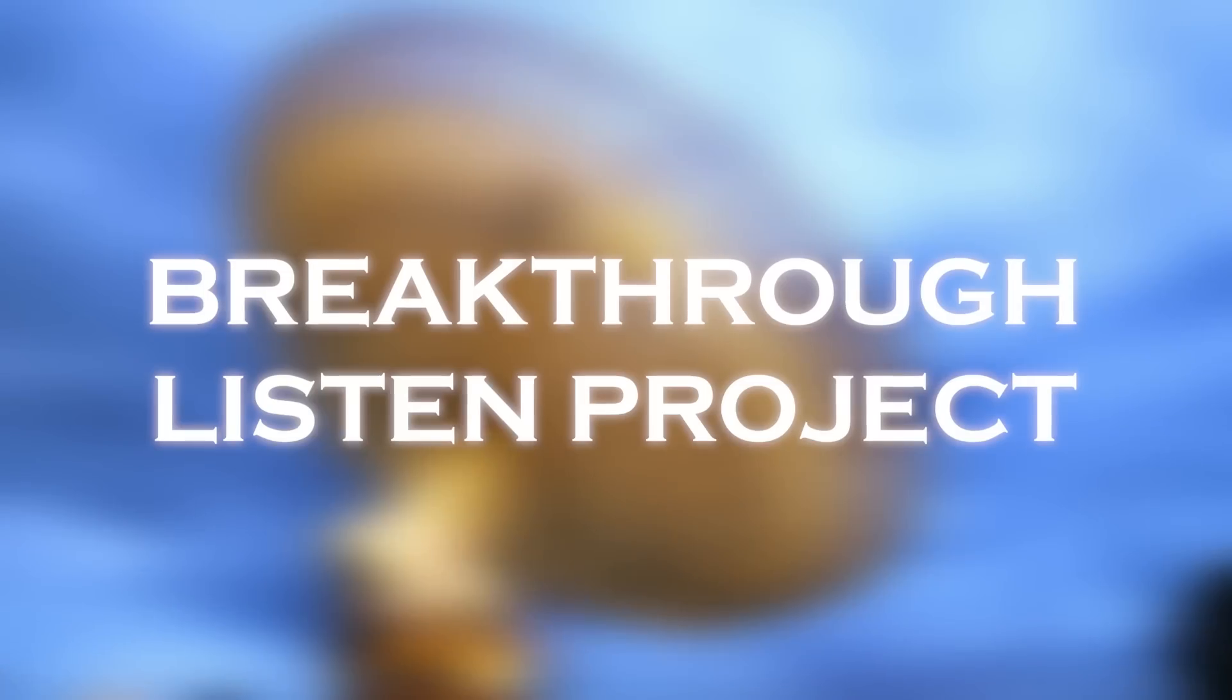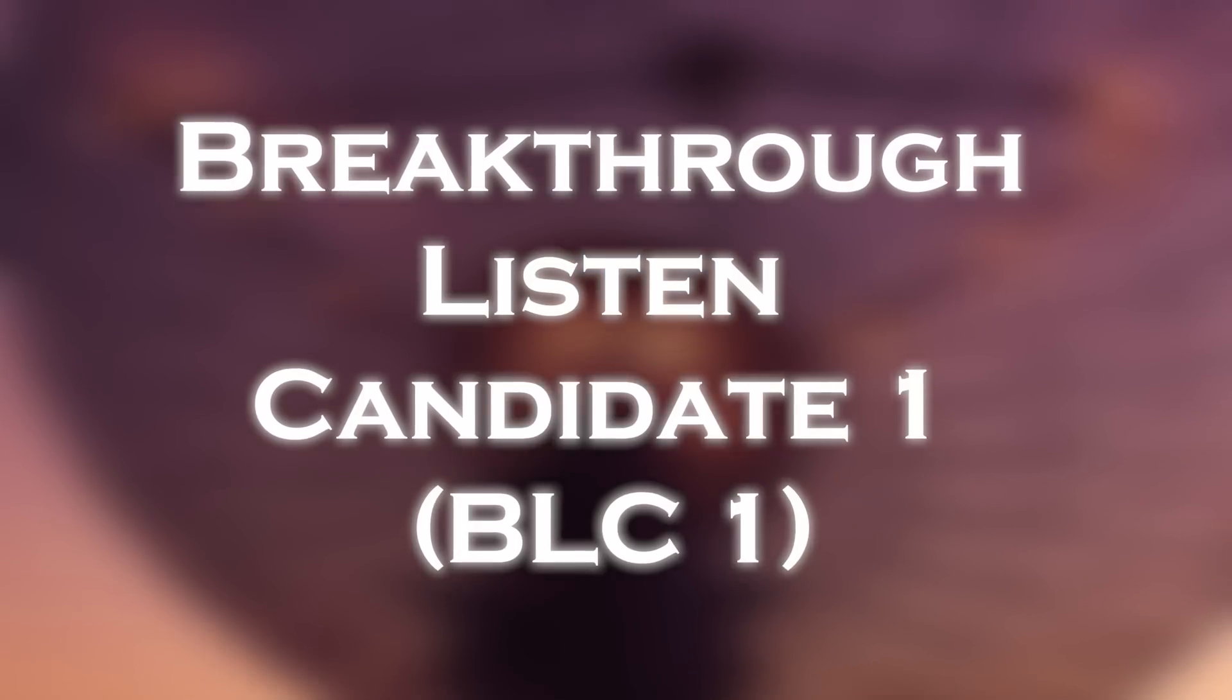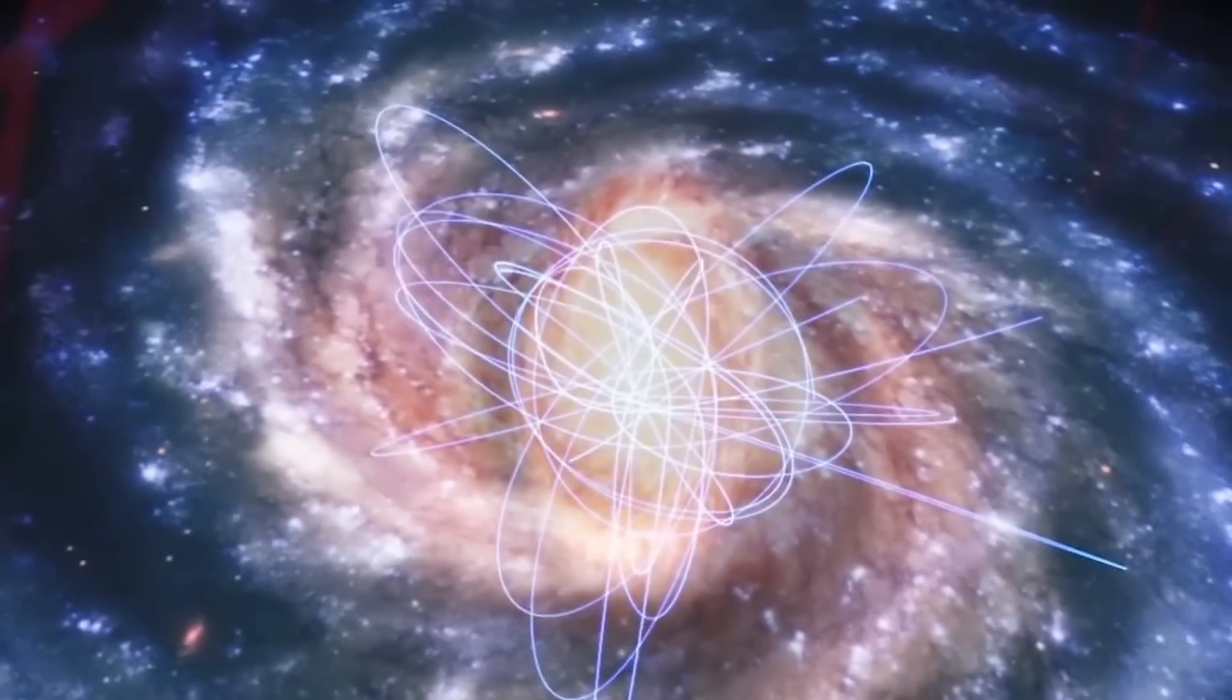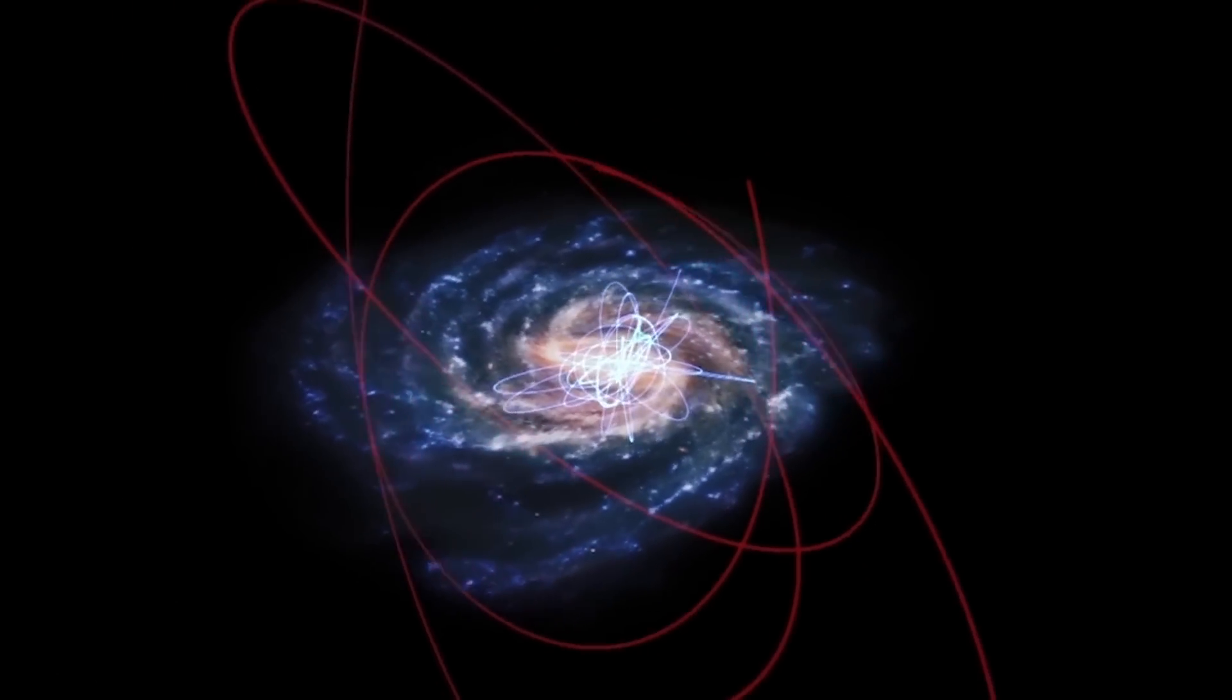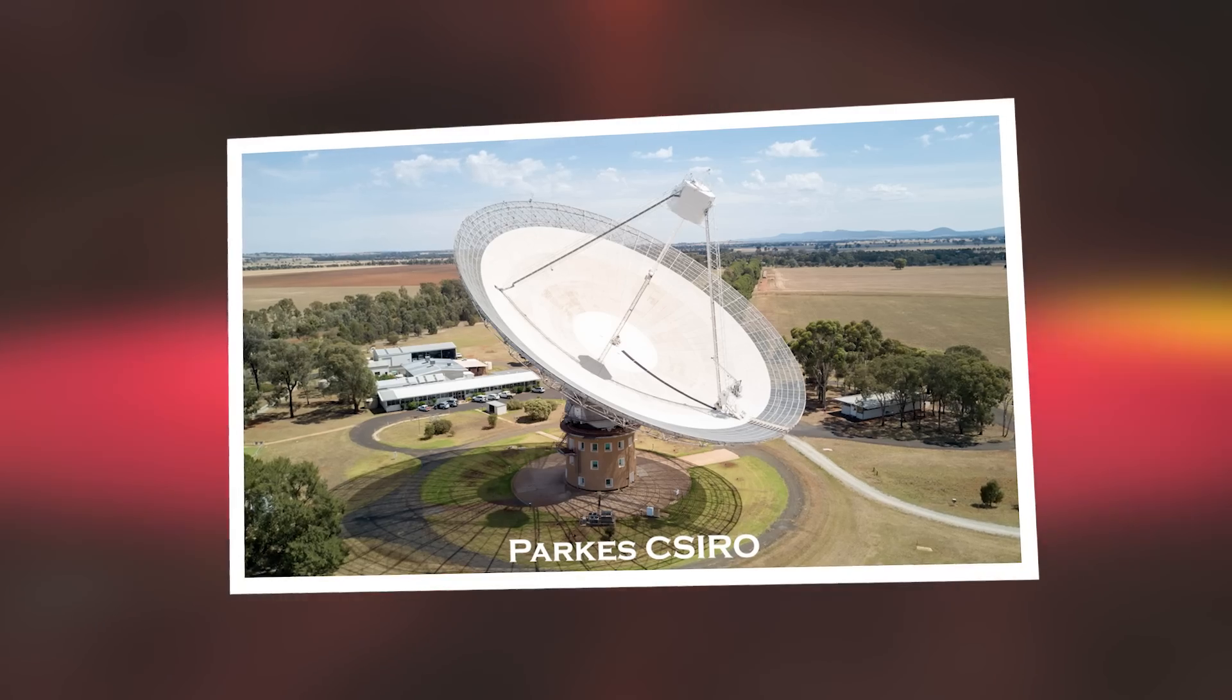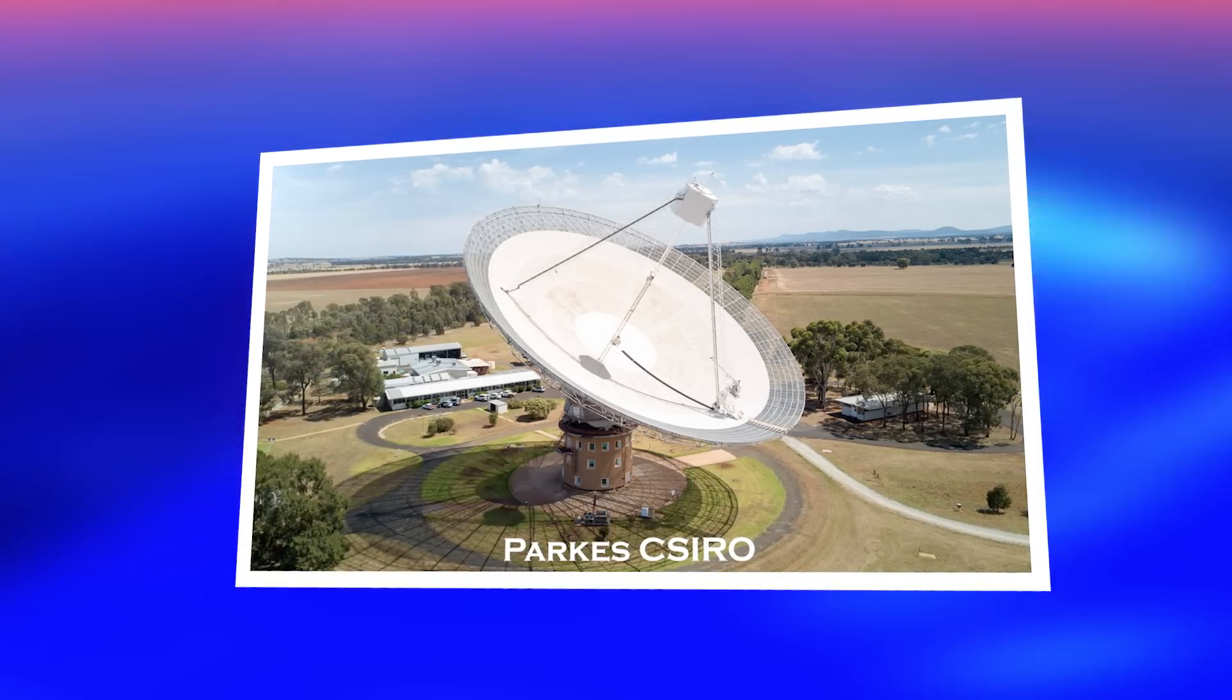The groundbreaking Breakthrough Listen project, dedicated to searching for extraterrestrial communication in the universe, has named this signal Breakthrough Listen Candidate 1, BLC1. The project, which has approximately 100 million in funding, has used thousands of hours of observation with state-of-the-art telescopes around the world. The signal was detected by the Parkes Observatory radio telescope in New South Wales, Australia. This telescope was observing the region of Proxima Centauri, the closest star to our sun.